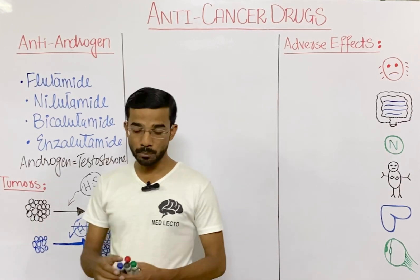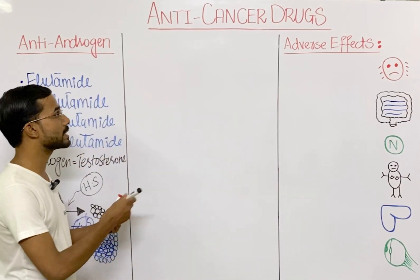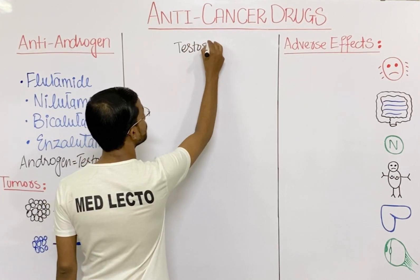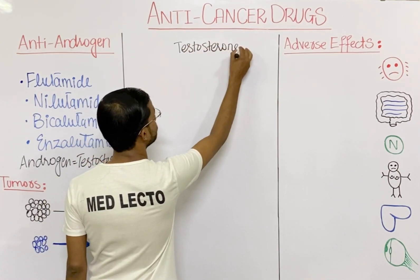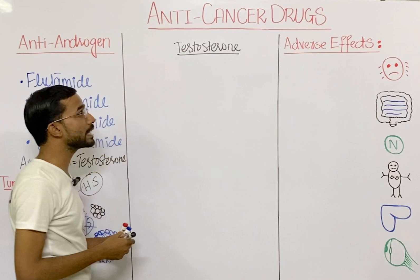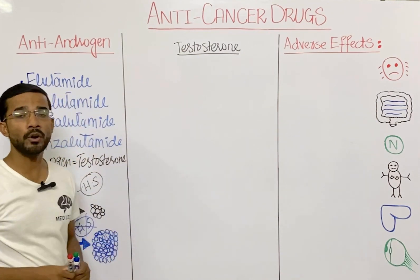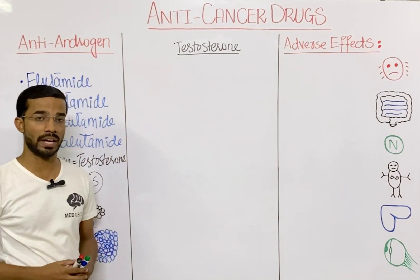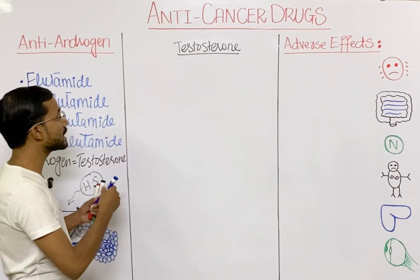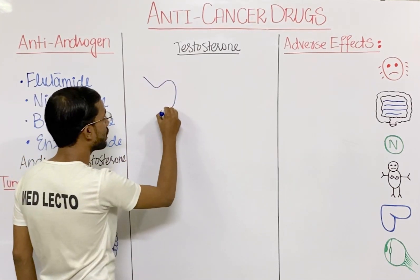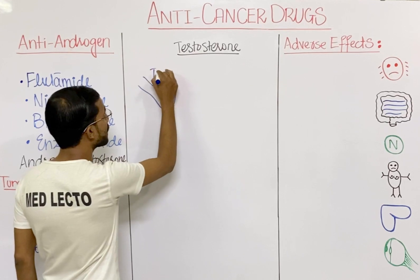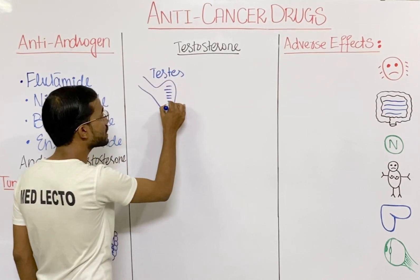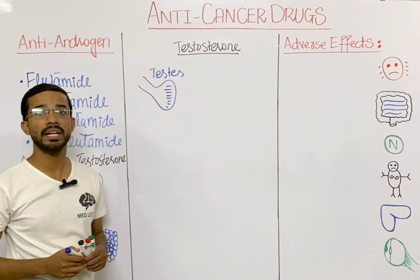The most important hormone in this context is testosterone. In the body there are two most important sources of testosterone production. The first one is the testes, which is a source of testosterone.